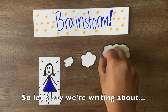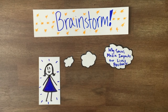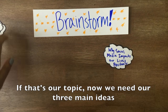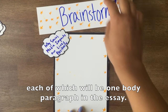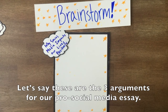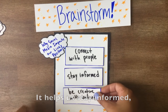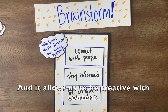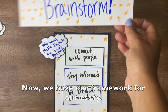So let's say we're writing about why social media is a positive effect on our lives. Now we need our three main ideas, each of which will be one body paragraph in the essay. Remember, a paragraph is about one main idea. So let's say these are the three arguments for our pro-social media essay: it helps us connect with people, it helps us stay informed, and it allows us to be creative with content. Now we have a framework for our essay.